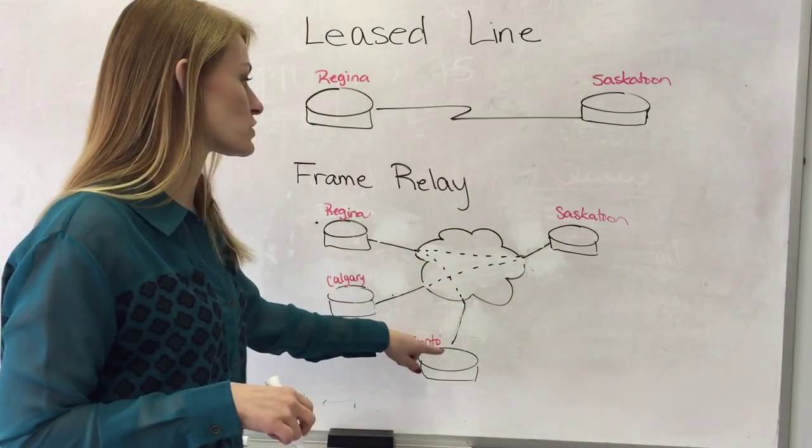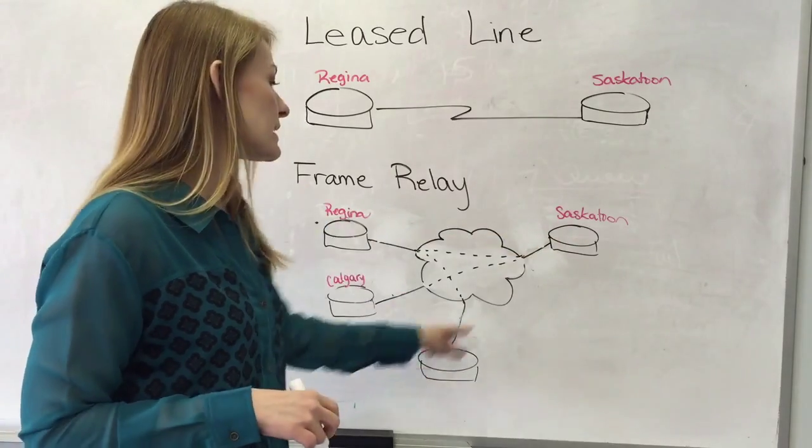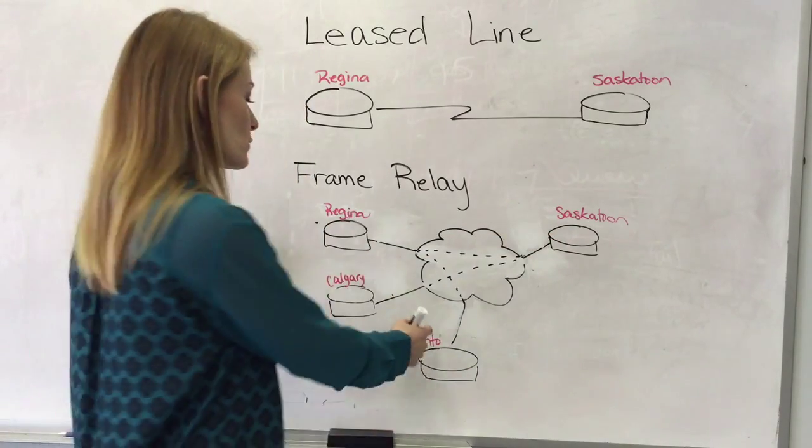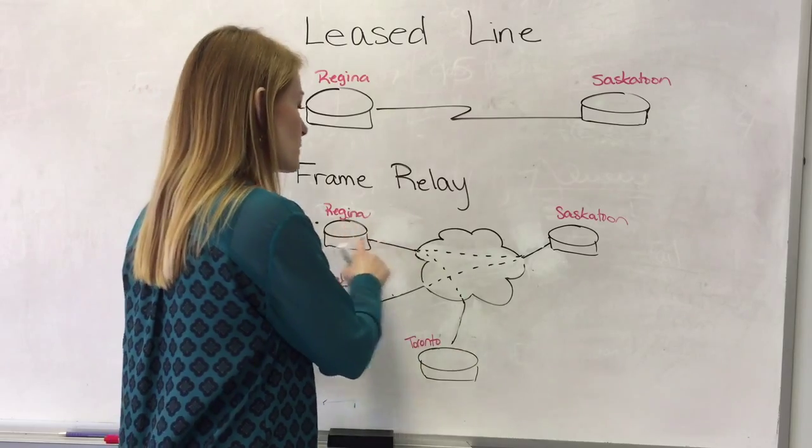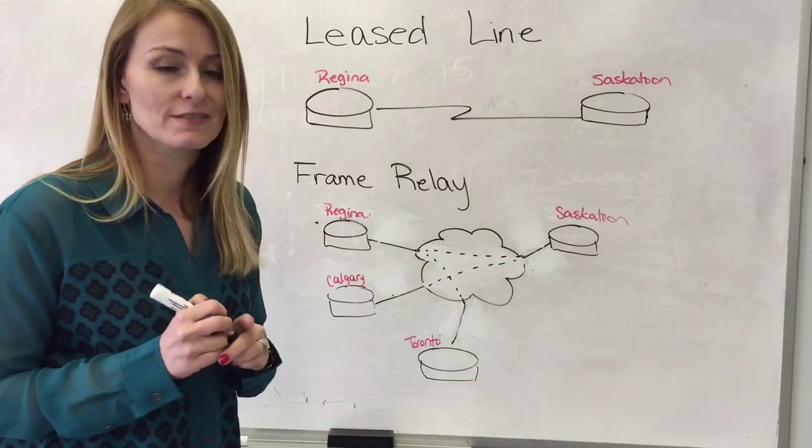So if Toronto needs to communicate with Saskatoon it doesn't have a direct virtual circuit there. So Toronto's got to go through Regina and then Regina can communicate to Saskatoon.